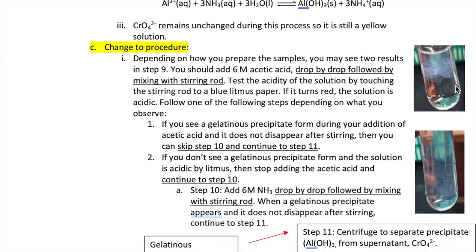If you see a gelatinous precipitate, then you stop adding your acetic acid and then you're going to skip step 10 and continue to step 11, which is a centrifugation step where you separate the precipitate from the supernatant.